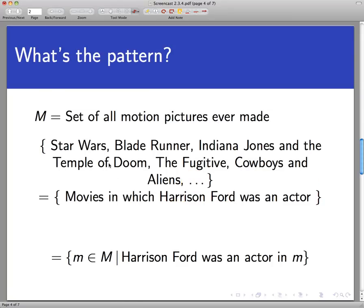We're going to shorthand this even further by introducing some notation here. We're going to write this set, the movies in which Harrison Ford was an actor, kind of in two parts. I'm going to label this part one and part two over here, and notice that they're separated by a vertical bar.